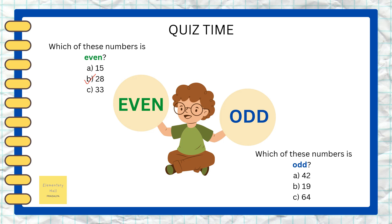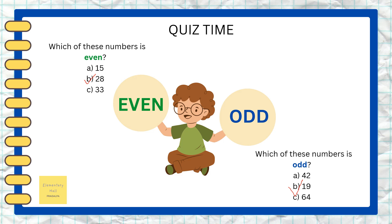Which of these numbers is odd: 42, 19, or 64? Think of the ending number. That's great — number 19 is an odd number! Why? Because it ends with number 9. Well done, kids — good job!